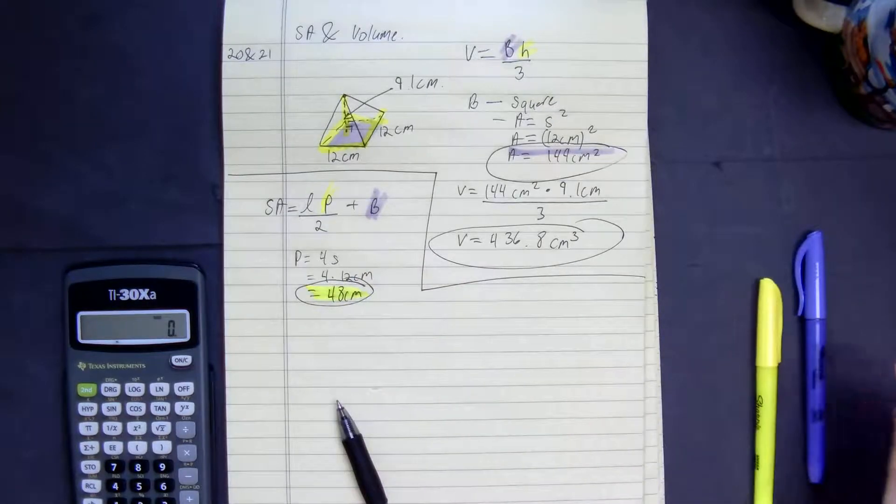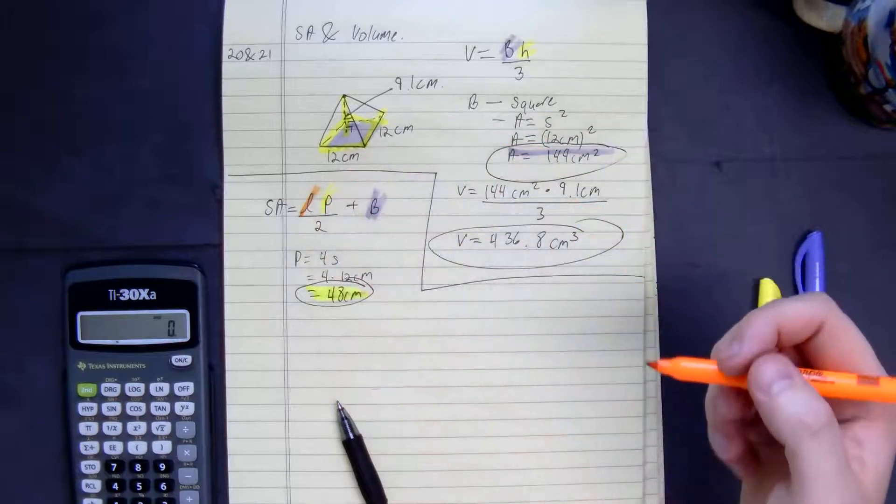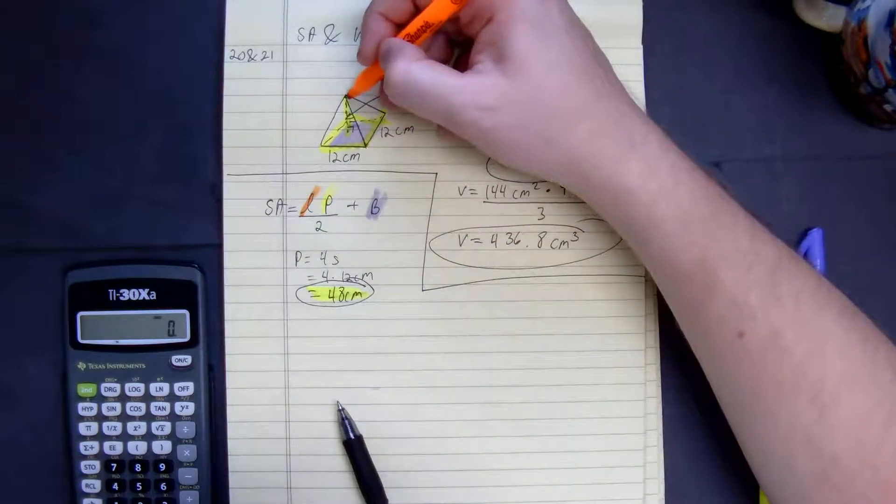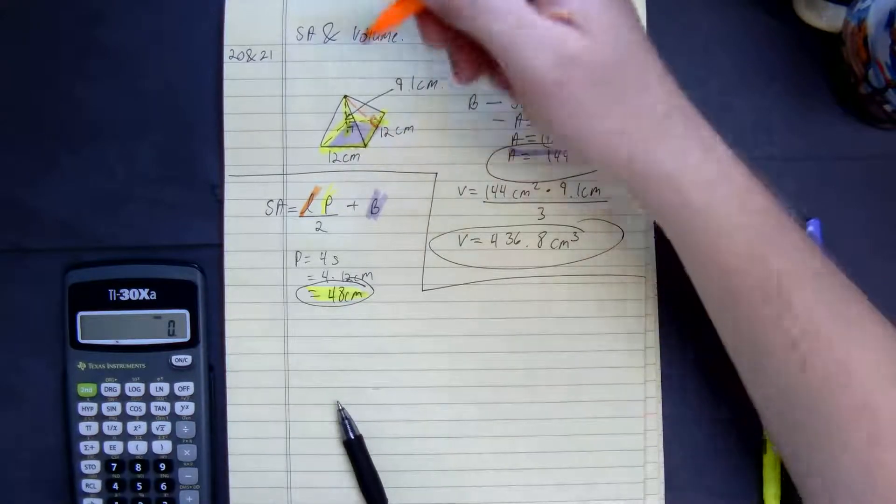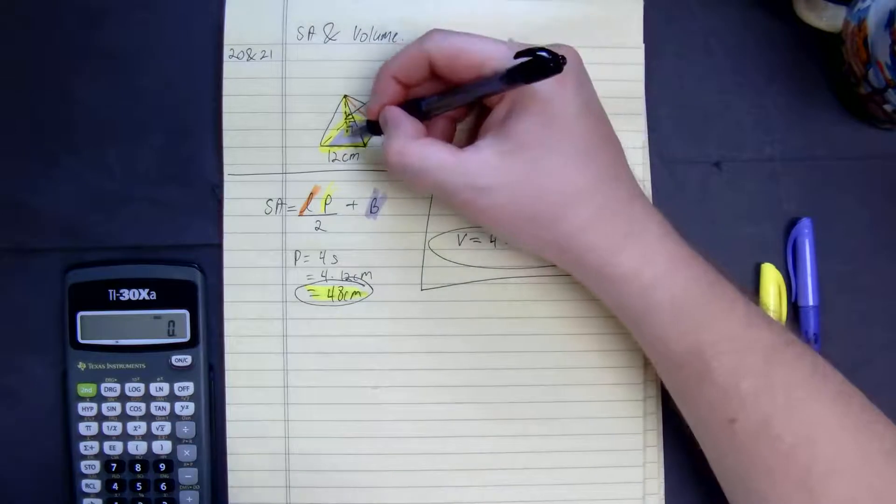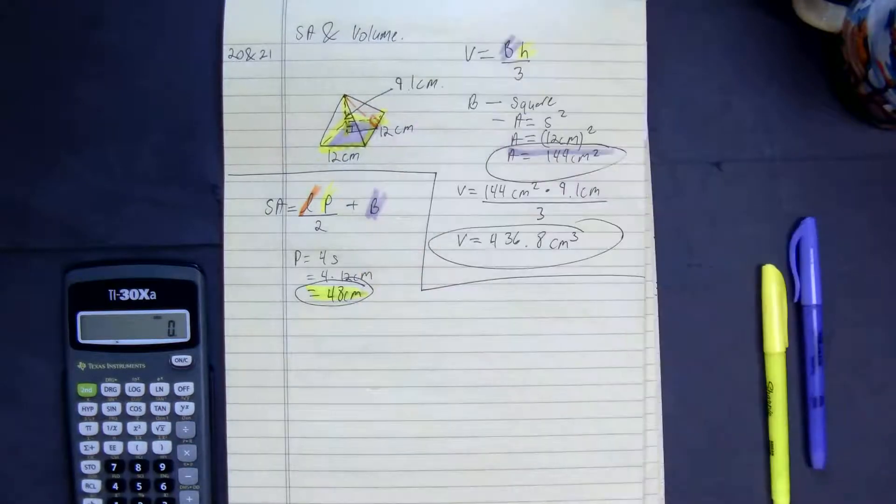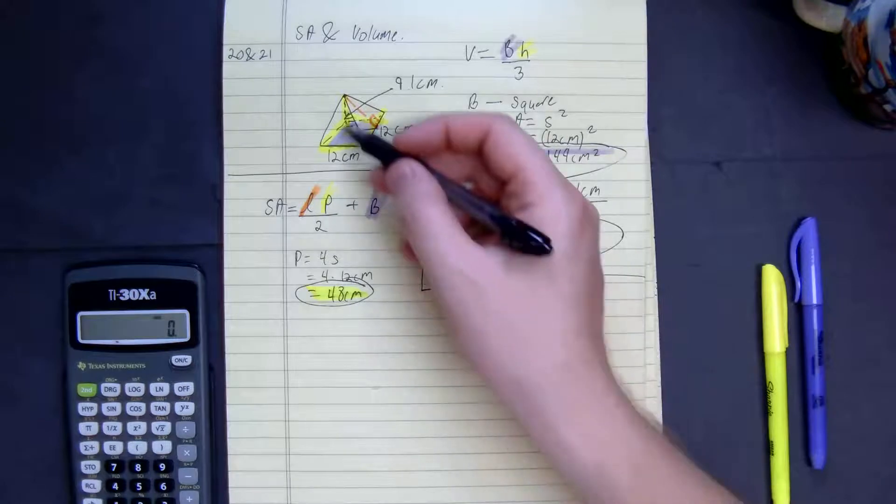So this problem has a little special added twist to it. We need to find the slant height. The slant height is the height of the triangles that make up the pyramid. So we don't know what that is. So what we're going to do is have to use the Pythagorean theorem to figure out what is our slant height of this pyramid. So I'm going to draw this out.